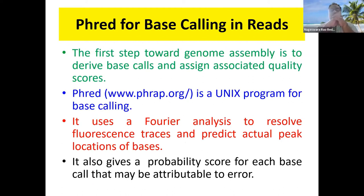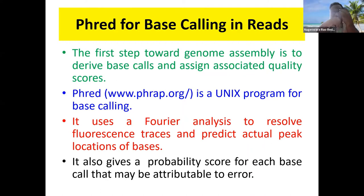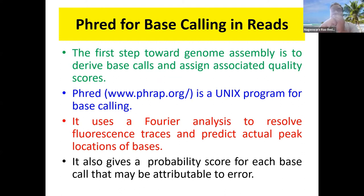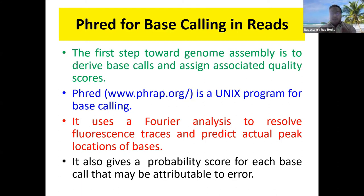The first tool, which is very important, is calling the base from the chromatogram. I have already shown how a chromatogram looks and how we can call a base from it. Calling here means looking at the chromatogram and getting the base. Each nucleotide is represented by a particular color — A, T, C and G each have one color — and we take all these chromatograms with fluorescent traces and try to predict the bases from them.